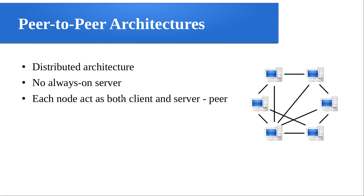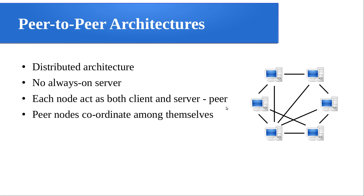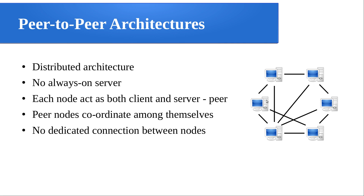At the same time, that server node itself can be a client to someone else. So there is no distinction like a client machine or server machine — we simply call it a peer. It has the role of both client and server at the same time. Peer nodes coordinate among themselves, and there is no dedicated connection between the nodes. For the time being they are connected to each other, but after some time this link may go and other links may become active.